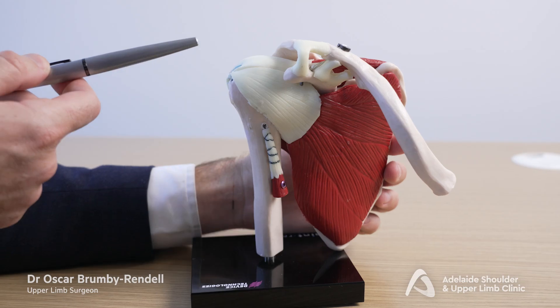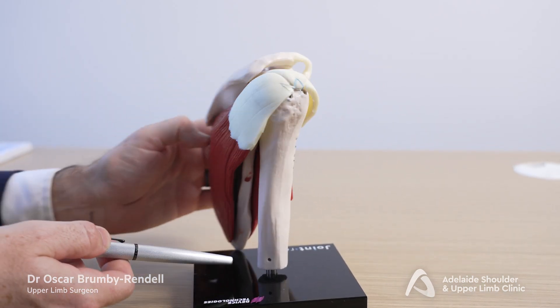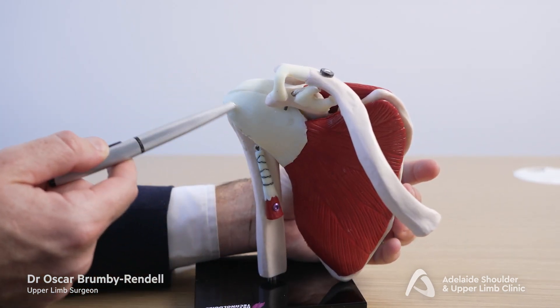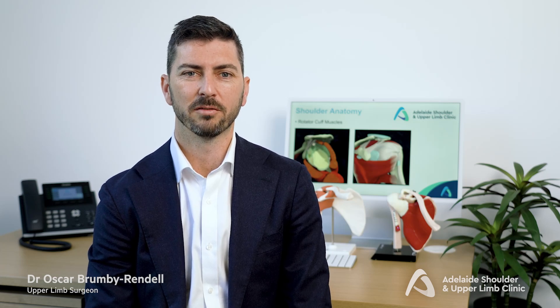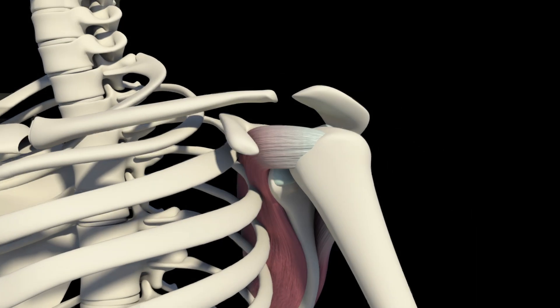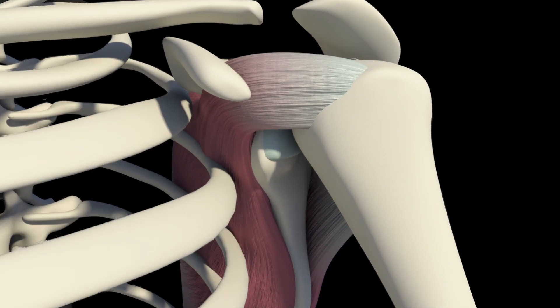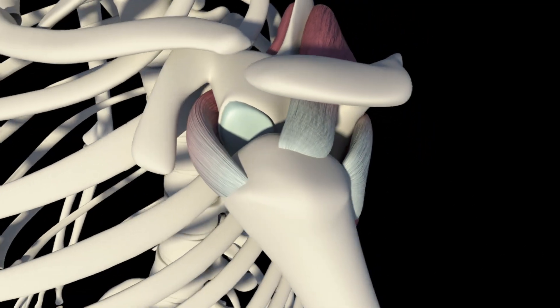The rotator cuff is the name given to four important muscles that move the shoulder: supraspinatus, infraspinatus, teres minor and subscapularis. The supraspinatus is the most commonly injured rotator cuff tendon. These muscles all originate from the scapula, then travel towards the humeral head and insert with a strong attachment onto the bone. They work together to rotate, elevate and abduct, or bring the shoulder out from the body.